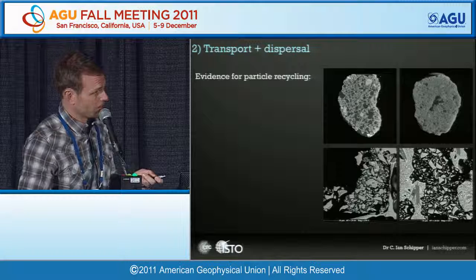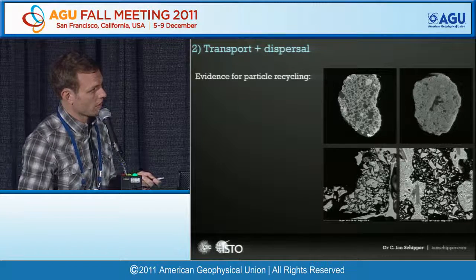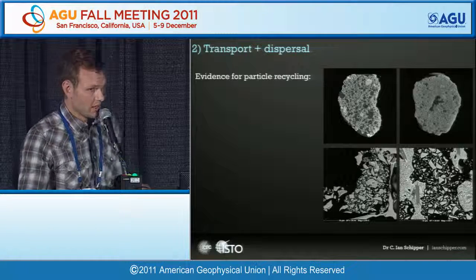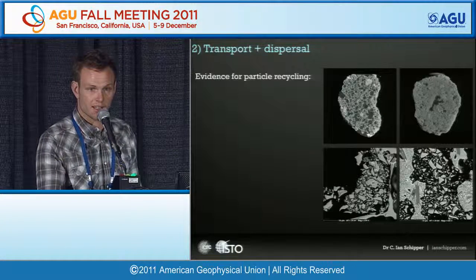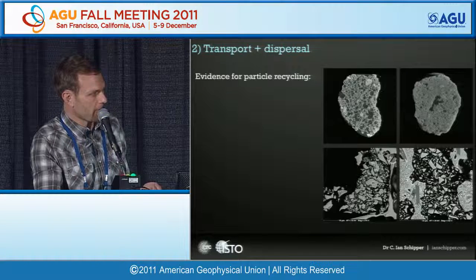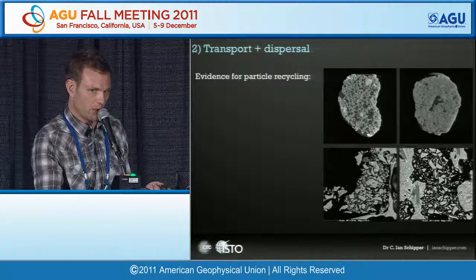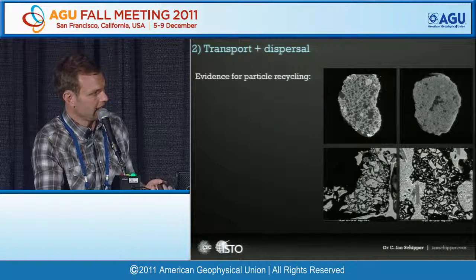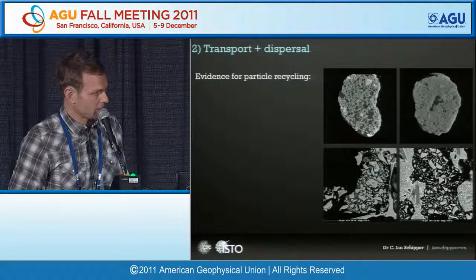Another example of recycling: if we look inside the larger vesicles in Surtsey clasts, whether in the dominant sideromelane population or voids in tachylyte grains, we see a whole bunch of ash particles. We first thought it was a thin-section preparation problem, but these are visible on tomographic scans deep inside clasts that have never been cut. The ash inside is morphologically similar to juvenile ash and of multiple populations — within a sideromelane clast, ash is both tachylyte and sideromelane. The melt was entraining material from a slurry in the vent.